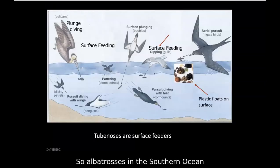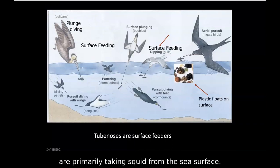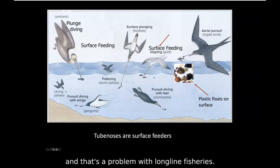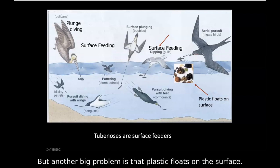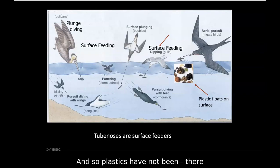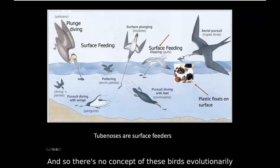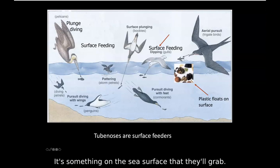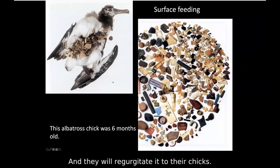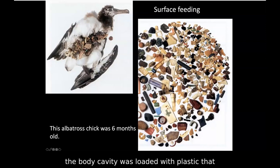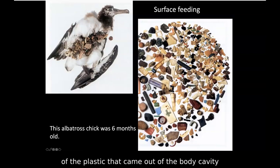Albatrosses are surface feeders. In the Southern Ocean they're primarily taking squid from the sea surface, and some also take fish. That's a problem with long-line fisheries. Another big problem is that plastic floats on the surface. There was no plastic in the ocean 50 years ago, so evolutionarily these birds have no concept that plastic isn't food — it's just something on the sea surface that they'll grab. They then regurgitate it to their chicks. This image from National Geographic shows a six-month-old albatross chick whose body cavity was loaded with plastic fed to it by its parent, and a two-page spread of that plastic.